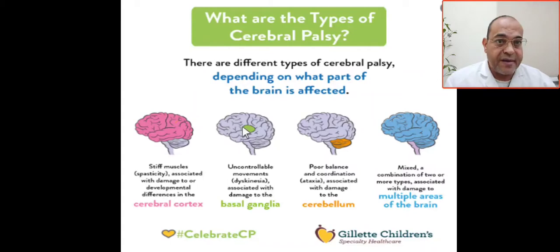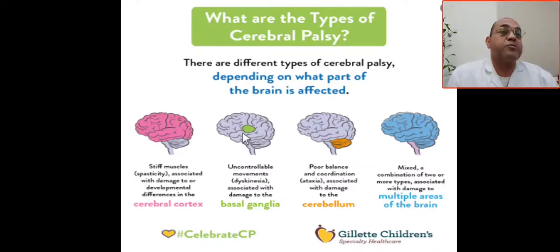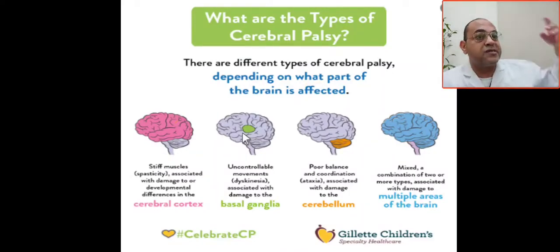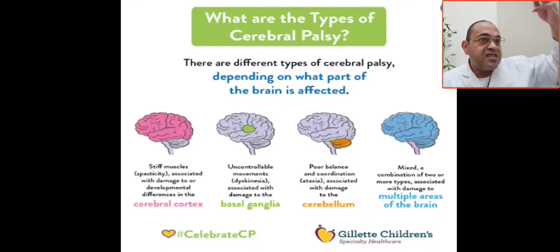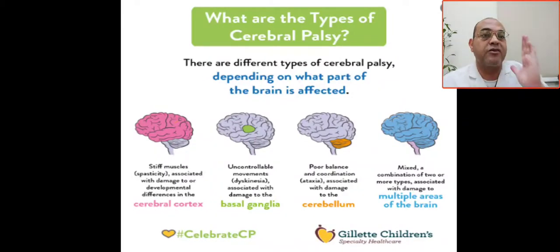The second type depends on affection of the basal ganglia. When the basal ganglia is involved, the type of cerebral palsy will be athetoid or dyskinetic, also called choreoathetoid — characterized by worm-like or snake-like movements.